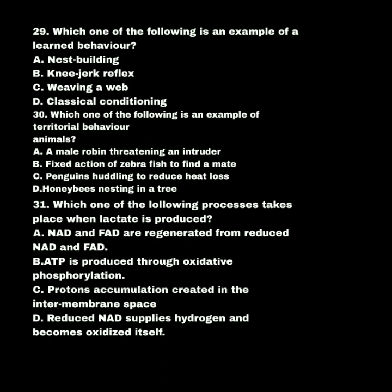Which one of the following is an example of territorial behavior in animals? A. A male Robin threatening an intruder. B. Fixed action of a zebrafish to find meat. C. Penguins huddling to reduce heat loss. D. Honey bees nesting in a tree. The answer is A: a male Robin threatening an intruder is an example of territorial behavior.